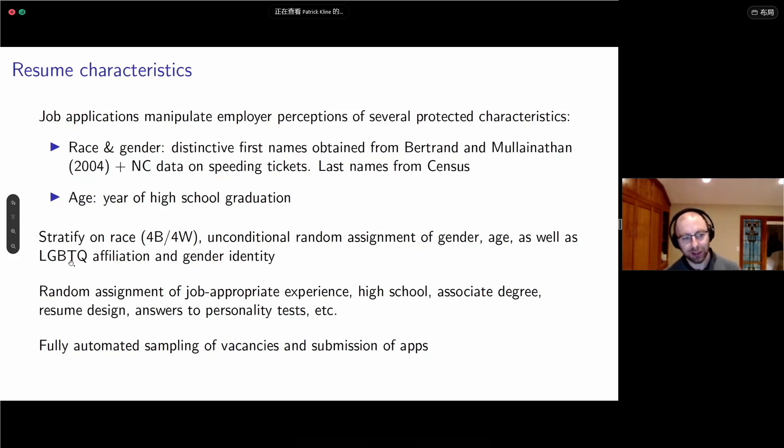We signaled where we manipulated employer perceptions of race and gender using distinctive first names. Last names were taken from the census. Age was manipulated indirectly via the year of high school graduation. Most employers do not allow you to directly volunteer your age. We stratified on race and manipulated indicators of LGBTQ affiliation, gender identity, some applications were given associate's degrees, and we automated personality tests with random draws from a known probability distribution.